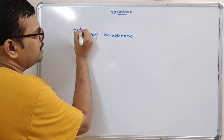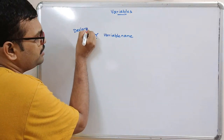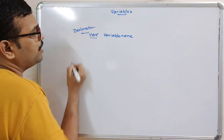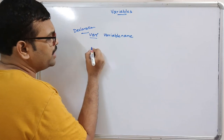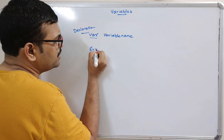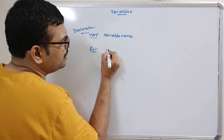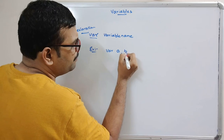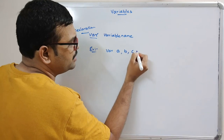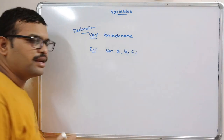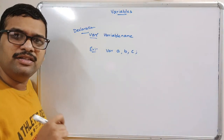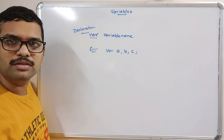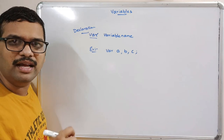So this is the declaration. An example for this declaration: VAR A, B, C — and each and every line should end with a semicolon, similar to our C language.